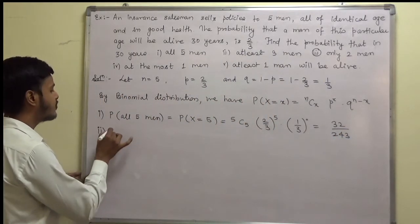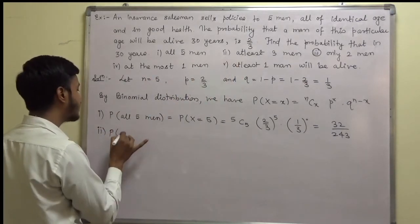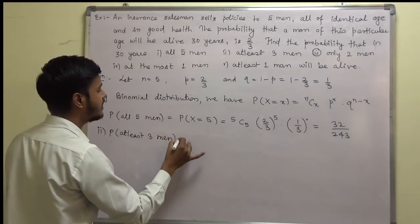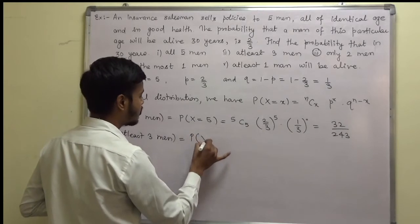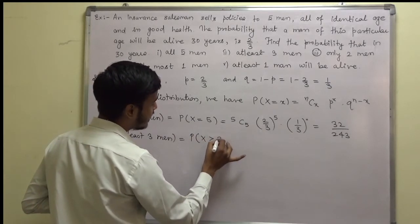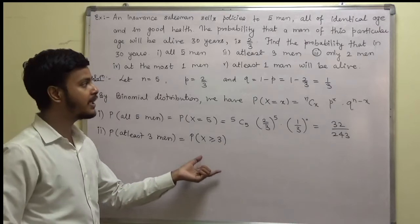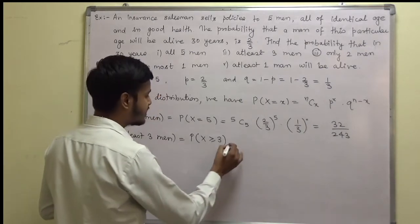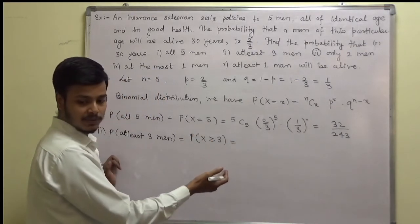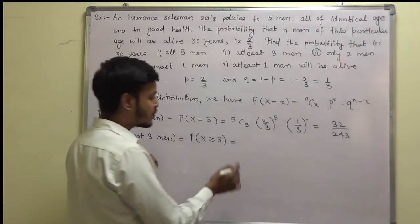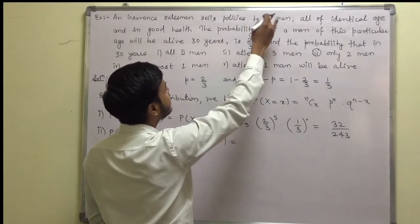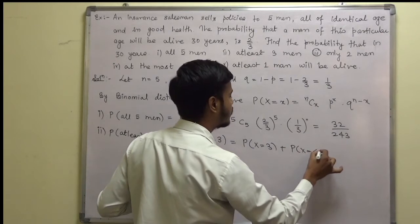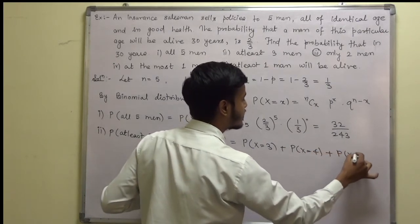Next, we have to find the probability of at least three men being alive. At least three means probability of X greater than or equal to 3. Since policies are sold to 5 men, this can be written as: probability of X equals 3, plus probability of X equals 4, plus probability of X equals 5.